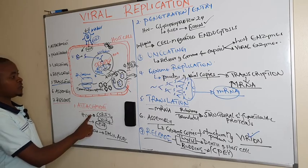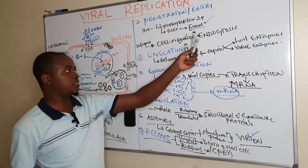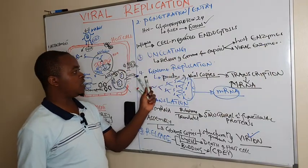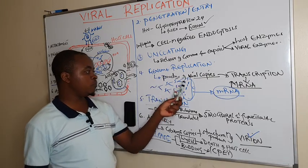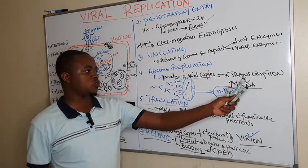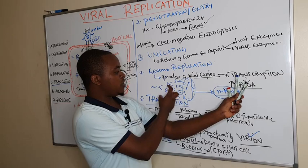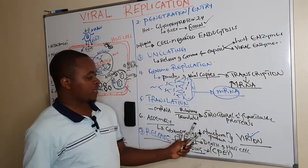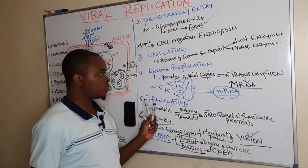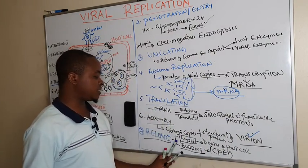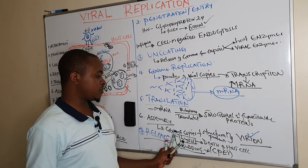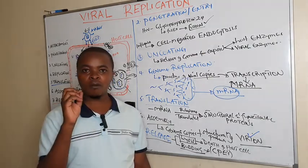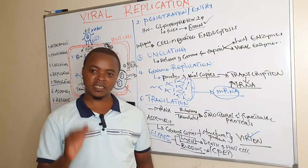In summary, we have discussed viral replication in seven steps: attachment, penetration or entry, uncoating aided by enzymes, genome biosynthesis or replication producing many copies, transcription to mRNA, translation to form structural and functional proteins, assembly, and finally release of viruses by either the lytic process or budding. Thank you so much for learning from beginning to end.